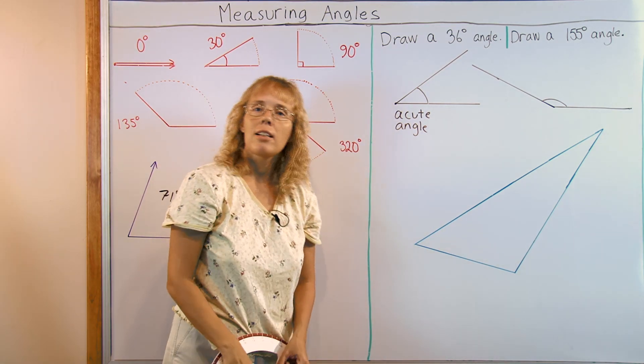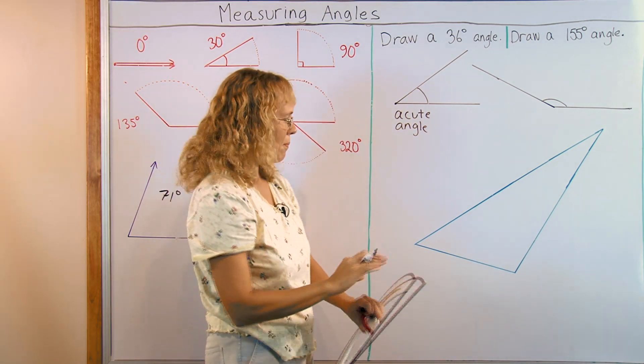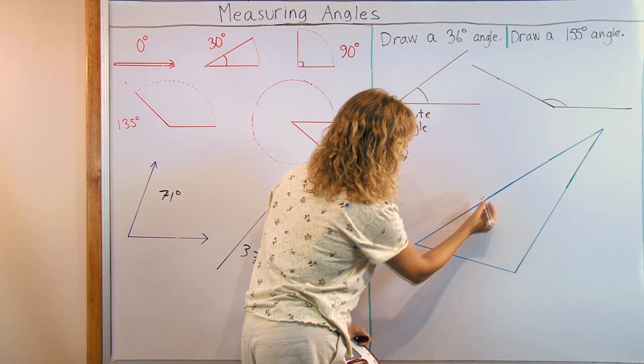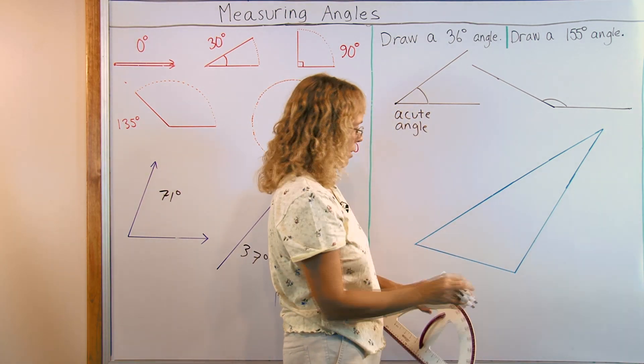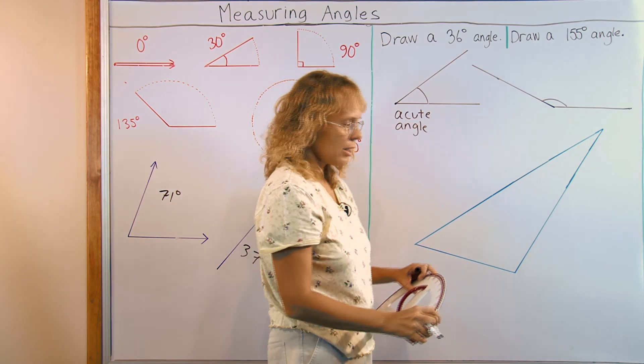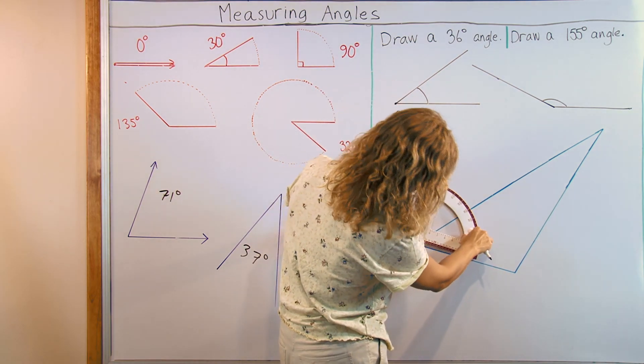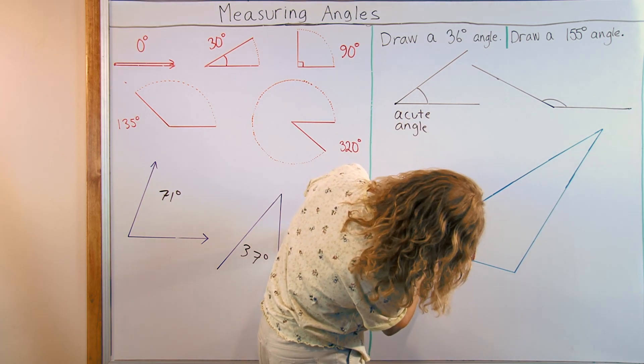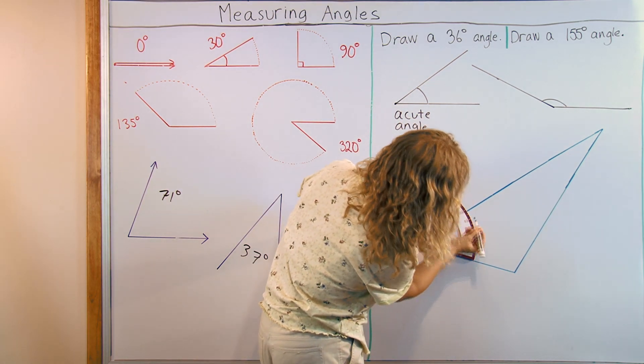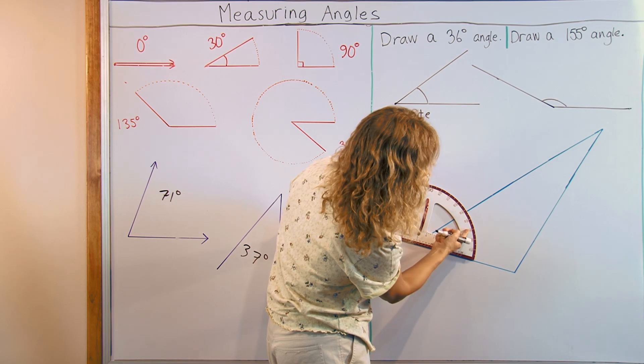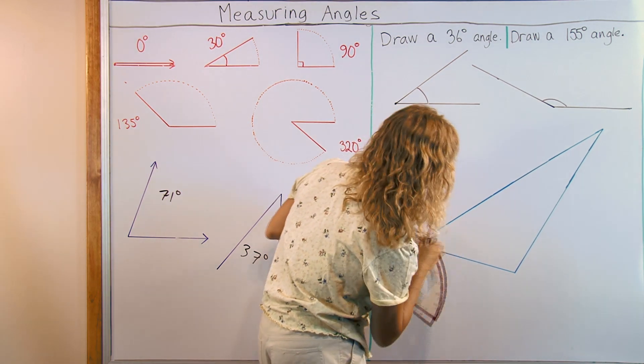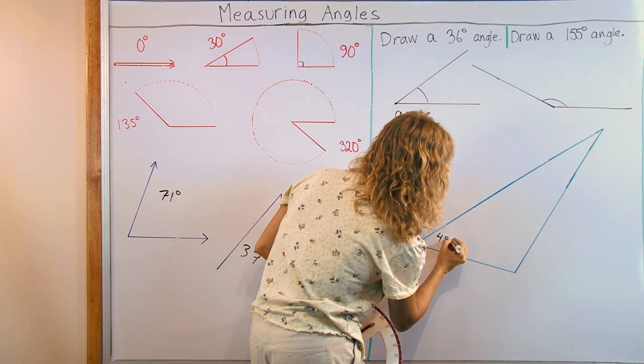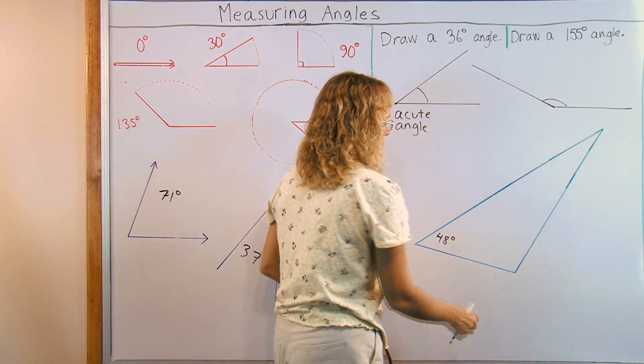Lastly, I have a triangle, and let's try to measure its angles. First angle here, it's easy, it's an acute angle, maybe about 40 degrees. I put my protractor like this, and read from here. This was 0, 10, 20, 30, 40, see it's almost 50. 48 degrees, I would say.